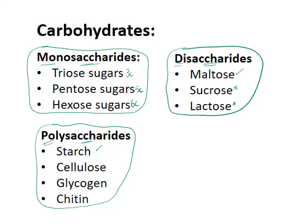Starch is found in plant cells and in organelles called chloroplasts, and it is a storage polysaccharide for chemical energy in the plant. Cellulose is a structural polysaccharide found in plant cell walls. Glycogen is also a storage polysaccharide but found in animals — specifically in liver and skeletal muscle cells. Lastly, chitin is a structural polysaccharide found in arthropod exoskeletons and also in fungal cell walls.